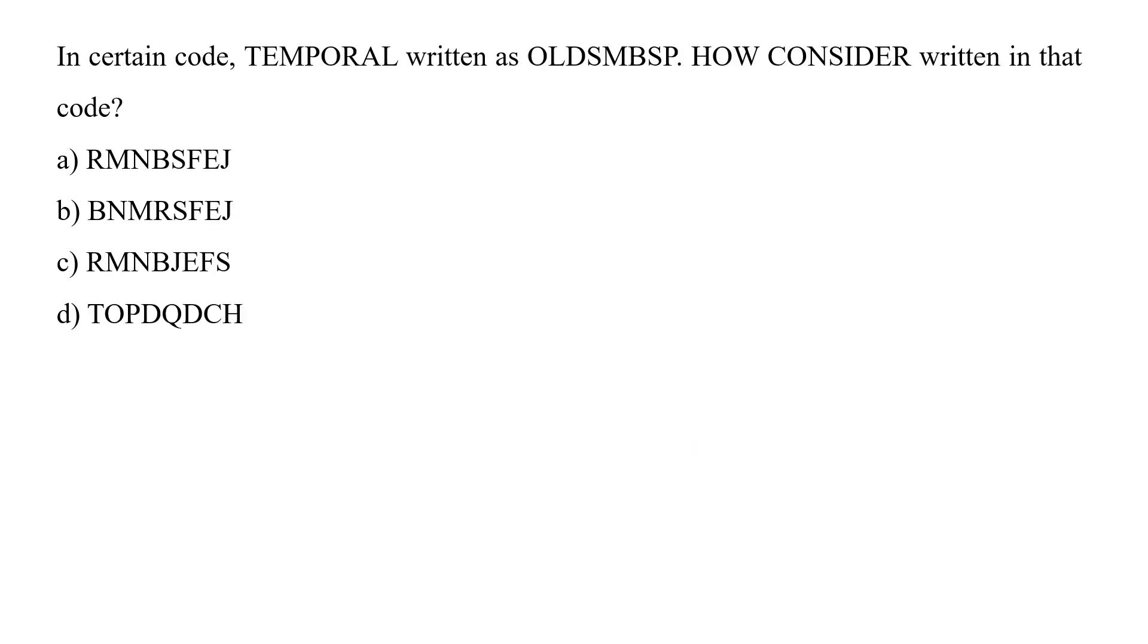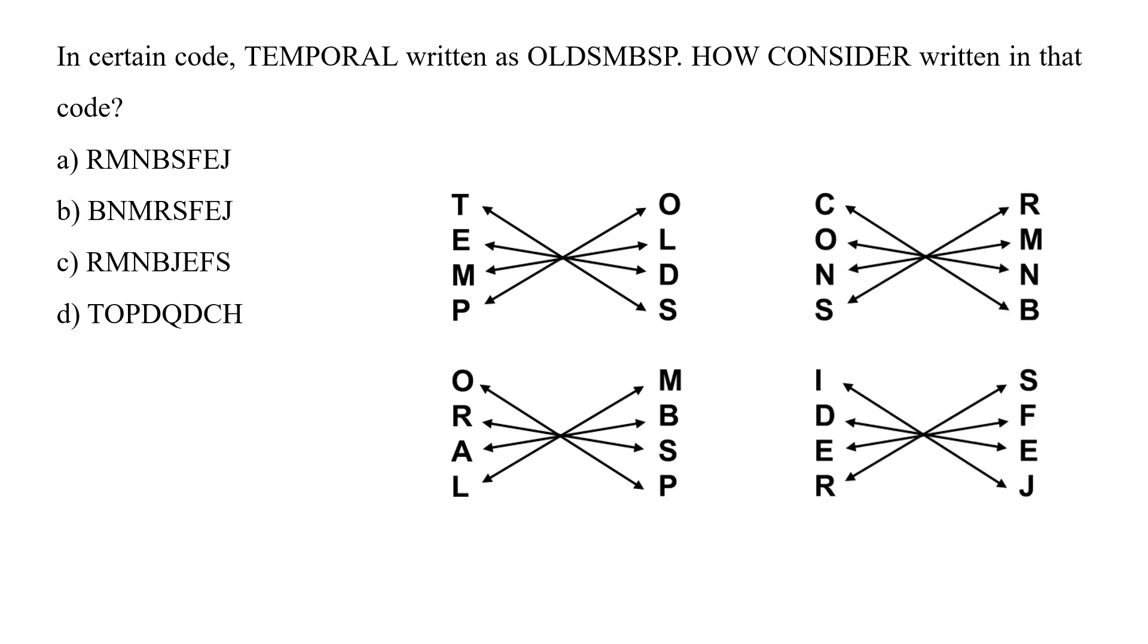In a certain code, temporal written as a word. Now in the same way, by following the same pattern, what would be the code for consider? So we have to find out in this case, we have to find out the relation. So let us relate temporal with the word OLDSMBP. So if you relate these words, then we will find out that T is related to the fourth alphabet, while E is related to D, M is related to L, P is related to O, and O is related to P, R is related to S, A is related to B and L is related to M. So they are the adjacent alphabets. So if we follow the same analogy for consider, then we will find out that the answer would be the option A, that is R, M, N, B, S, F, E, J.